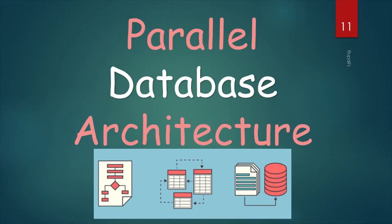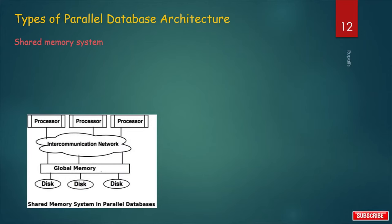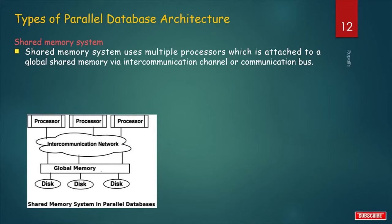We need to learn certain architectures to handle parallel database systems. Types of parallel database architecture: first, Shared Memory System. In shared memory architecture, a single memory is shared among many processors. Several processors are connected through an interconnection network with main memory and disk. The interconnection network is usually a high-speed network — may be a bus, mesh, or hypercube — which makes data sharing easy among various components: processors, global memory, or disk. Shared memory system uses multiple processors attached to a global shared memory via an intercommunication channel or communication bus.